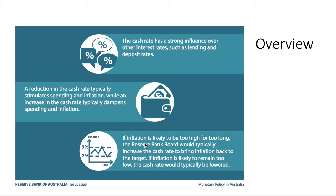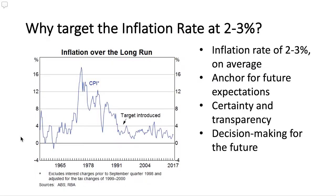Sometimes we need to know that terminology and use it ourselves. If inflation is likely to be too high for too long, the board will typically increase the cash rate to bring inflation back to the target. If inflation is likely to remain too low, the cash rate would typically be lowered. They could reduce it to increase inflation, and then if it starts to get too high, increase the cash rate to bring it back down — going back and forth. So why target the inflation rate? Well, what else could they target? They could target GDP growth or the unemployment rate, but they've found that the inflation rate is the best general overall rate to target and keep an eye on the overall economic situation.